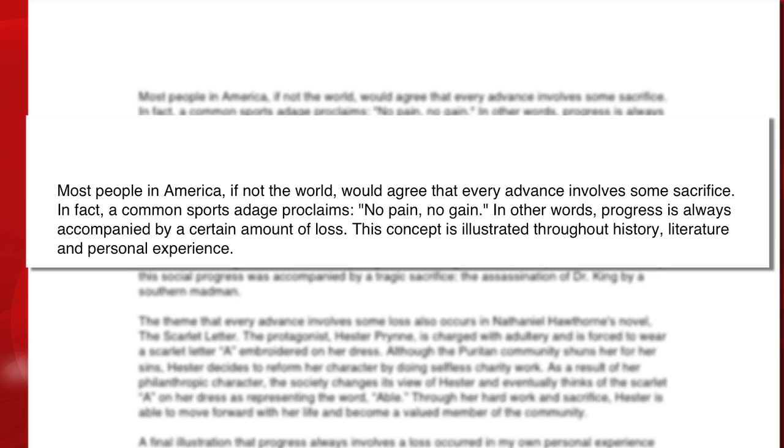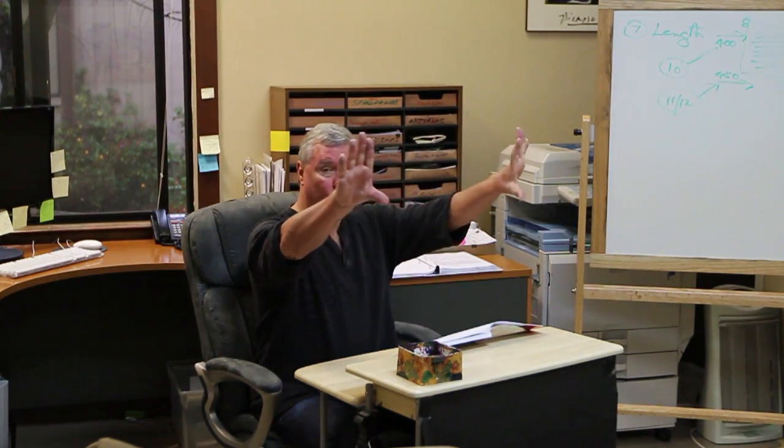Utilize good writing style by putting those transitions in to give your writing more spark. Put quotes in quotation marks to show the reader you can appreciate external ideas. And once you include a quote in your essay, put it in your own words. The next sentence is: 'In other words, progress is always accompanied by a certain amount of loss.' That's your encapsulation of the prompt — every advance involves some loss. That's your topic sentence. So you start with a broad sweeping statement, mix in some quotes or anecdotes, put things in your own words, and then hit them with the thesis.